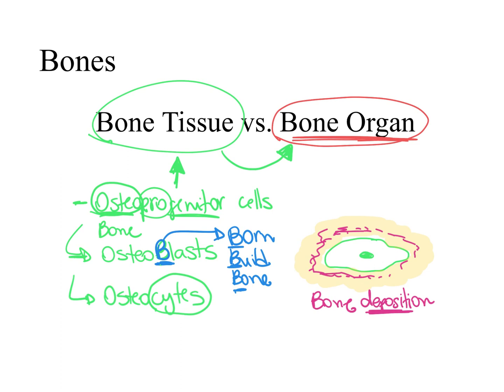The osteoblasts deposit minerals such as calcium into the extracellular matrix. We need to keep the levels of calcium in our blood at homeostatic levels. One of the reasons is that calcium is very important in blood coagulation — for the coagulation cascade to occur, we need a specific amount of calcium in the blood; otherwise, we would bleed to death. This calcium from the bloodstream is sucked out and dumped into the extracellular matrix, and that forms the bone.